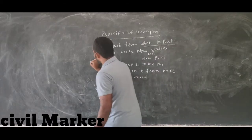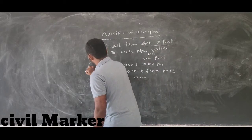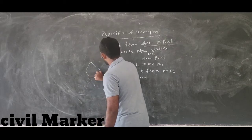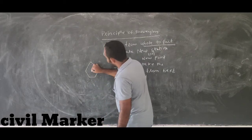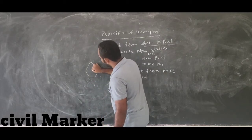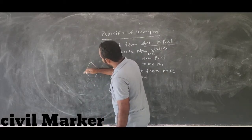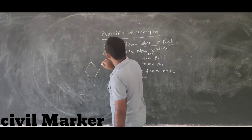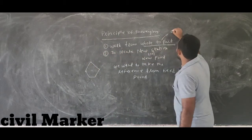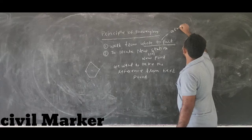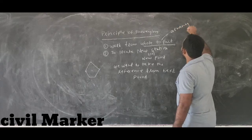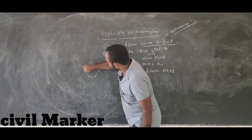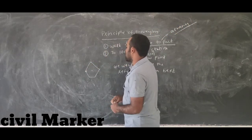For example, here is an area. Work from whole to part — here is a main station. Any visibility? Correct accuracy. Accuracy is very important. Accuracy is a fixed point.